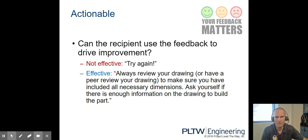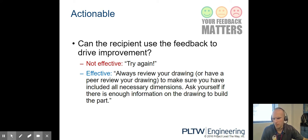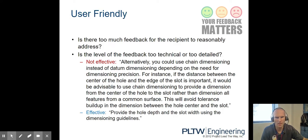Actionable. Not effective is just saying 'try again.' Effective would be: always review your drawing to make sure you have included all necessary dimensions. Ask yourself if there is enough information on the drawing to build the part. That would be an effective, correct way to provide feedback.